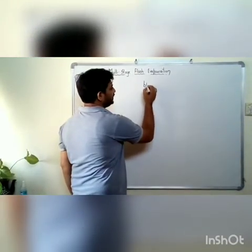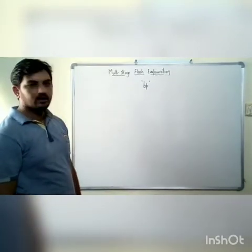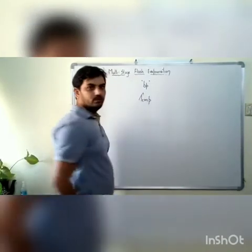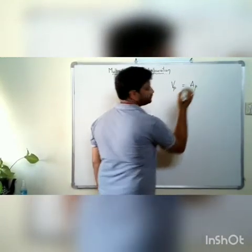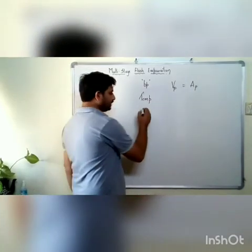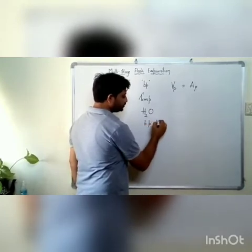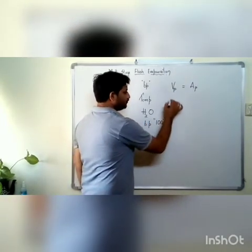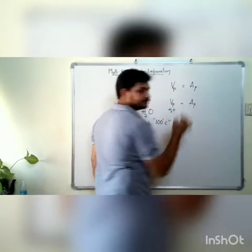What is the boiling point of a liquid? Technically, the boiling point of a liquid is the temperature at which the vapor pressure of the liquid is equal to atmospheric pressure. For example, in the case of water, the boiling point at one bar pressure is observed to be 100 degrees Celsius. That means at 100 degrees Celsius, the vapor pressure of water will be equal to atmospheric pressure.